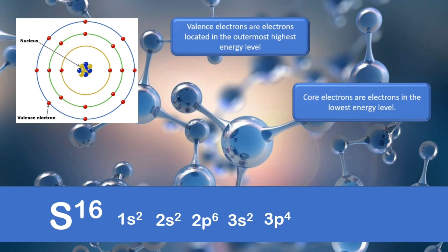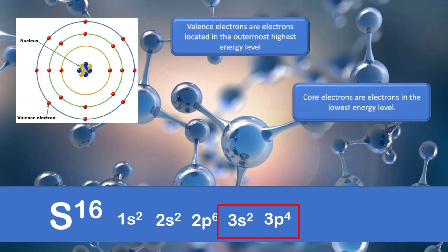Based on the SPDF notation, can you guess what are the core electrons? These are the core electrons because, as mentioned, core electrons are electrons in the lowest energy level. How about the valence electrons? 3s2 and 3p4 are the location of the valence electrons, because among these energy levels, 3 is the highest energy level.